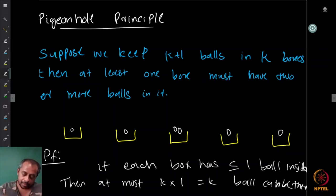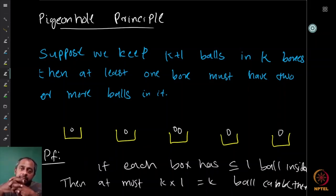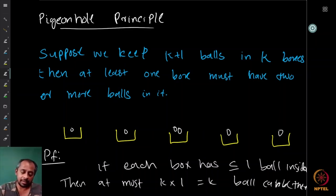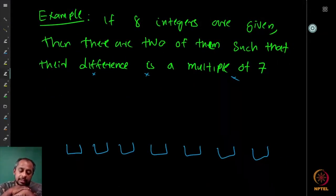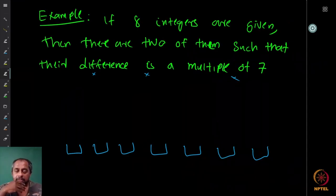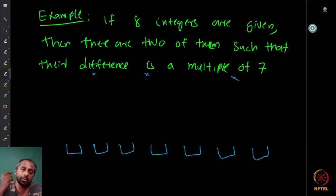This supposedly very simple looking principle — how can such a simple statement have real applications in mathematics? In fact we are going to see many very nice applications in today's lecture. We start with a very simple example: suppose you have eight integers and you are asked to show that out of these eight integers, there are two among them whose difference is divisible by seven.